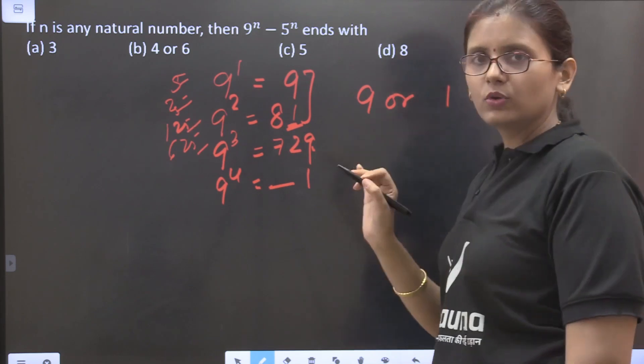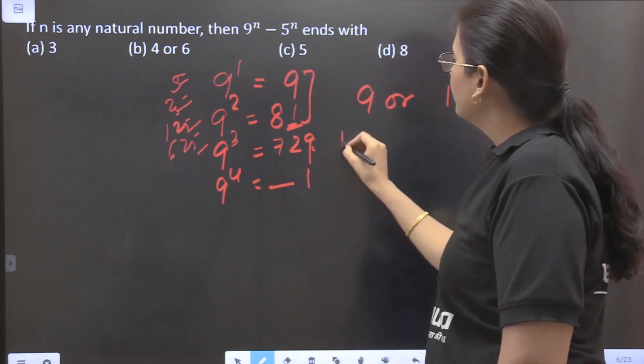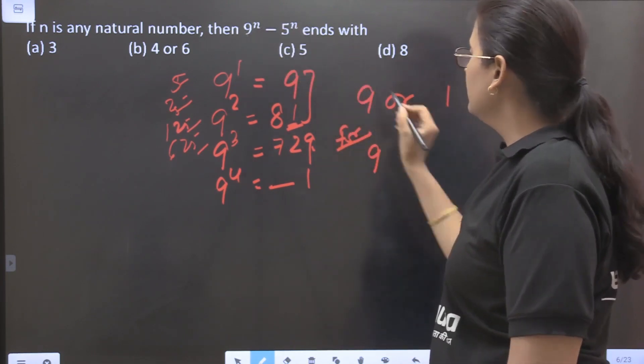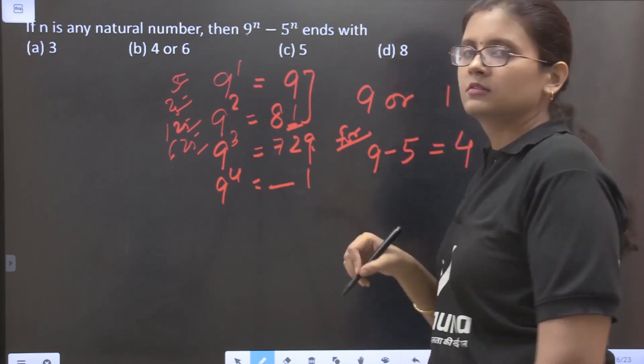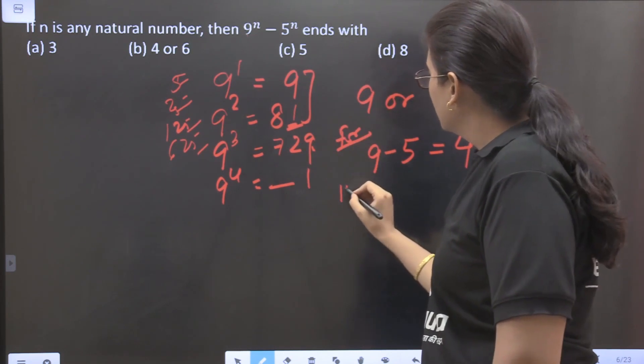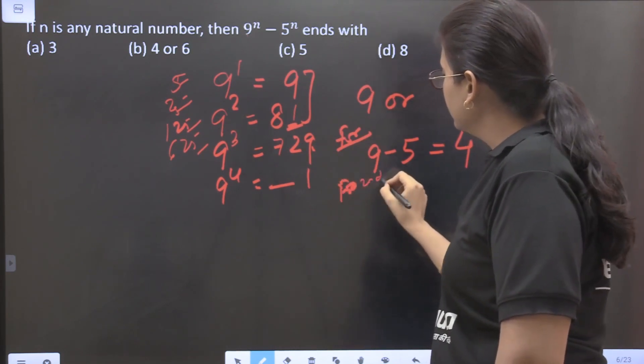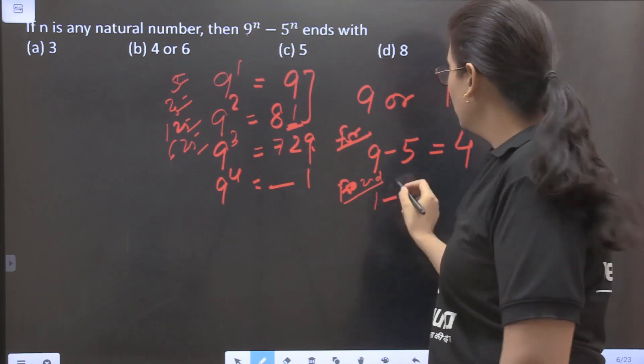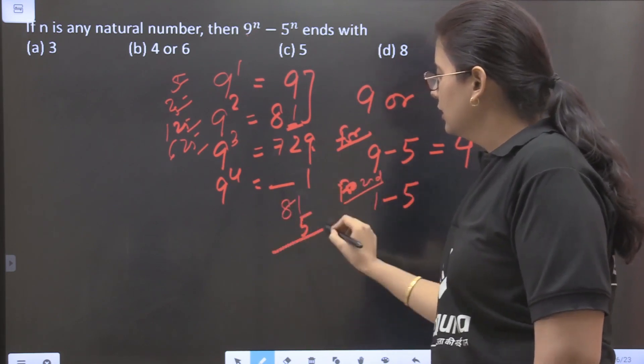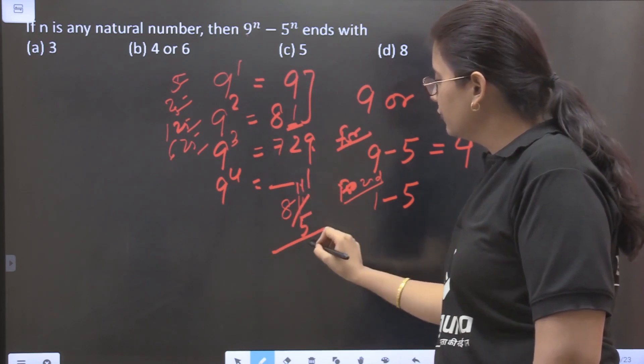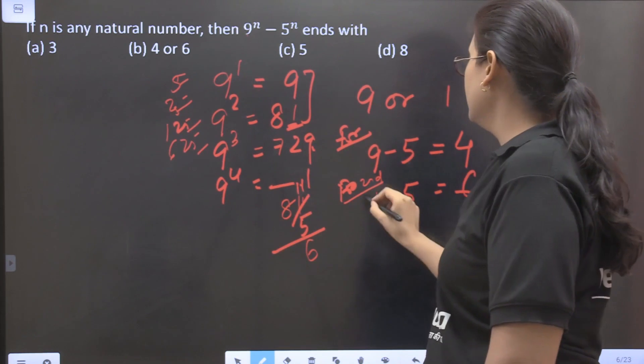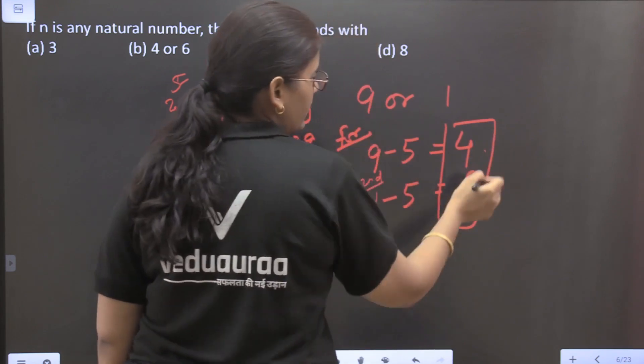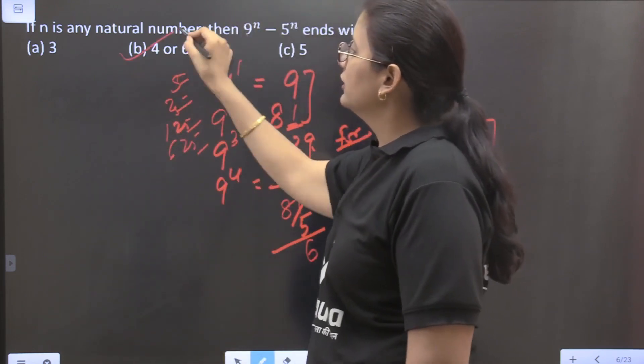So we know that the unit's place will be either 9 or 1 for 9. And for 5 it will always be 5: 5, 25, 125, the unit's place is always 5. So there are 2 cases for this in which it will end. For first case when unit's place of 9^n is 9, then 9 minus 5 will be 4. And for the second case it will be 1, so 1 minus 5, when you cut it like it is 81 minus 5 then this will be 11, so 11 minus 5 will be 6. Now we know that it could end in only 2 numbers: 4 and 6. So our option is also 4 or 6.